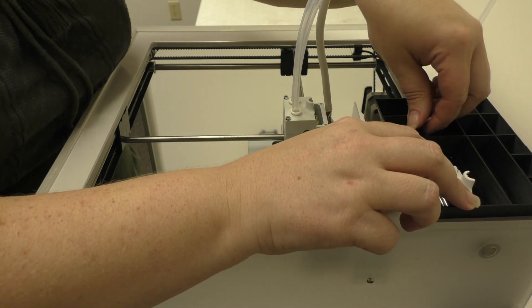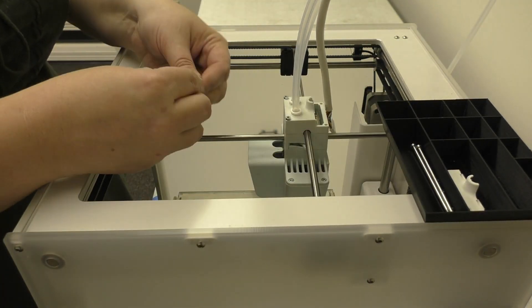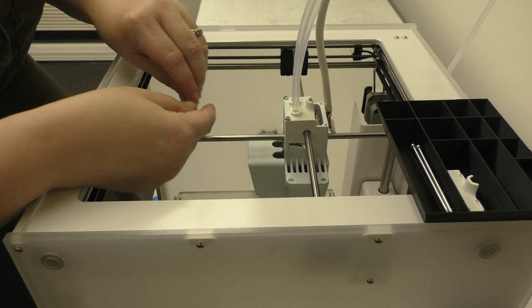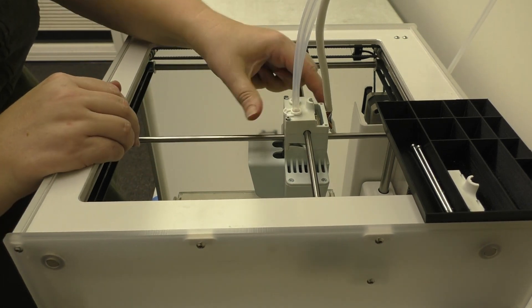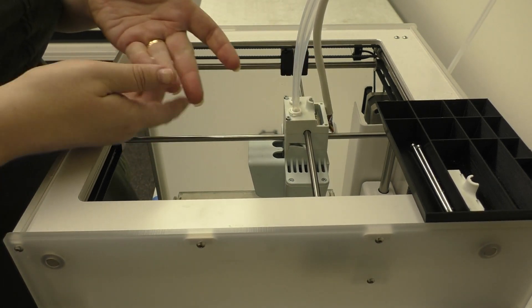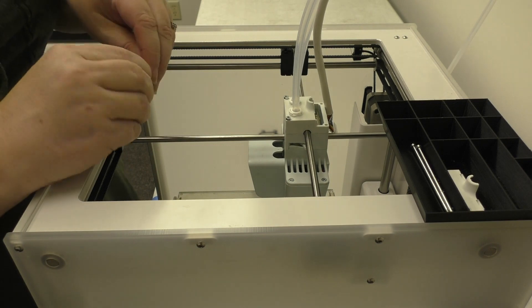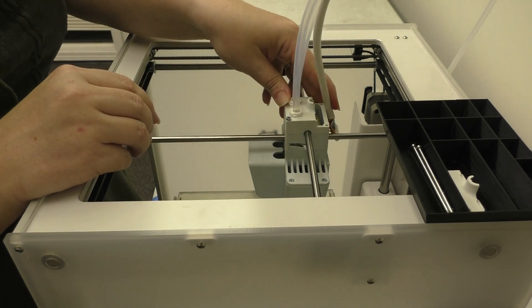Take your clamp clips. We're going to go ahead and slide those underneath the collet. If you ever lose your clamp clips, it's very easy to print more.